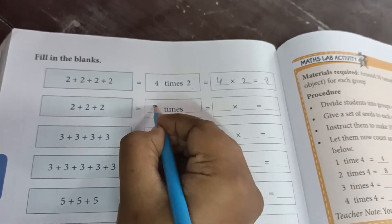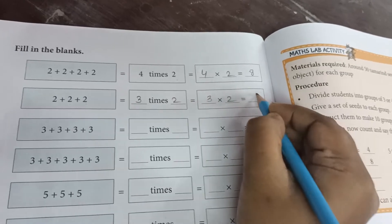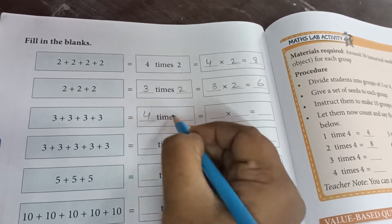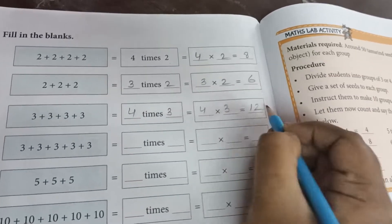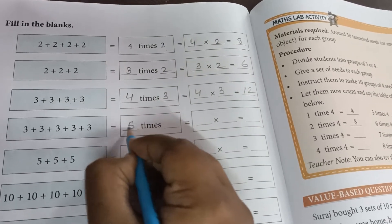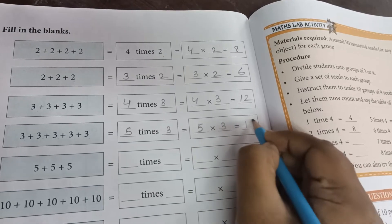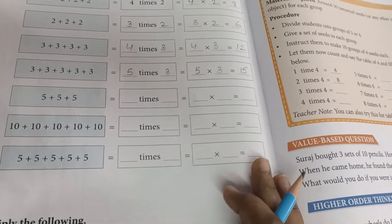Now 1, 2, 3. So, 3 times 2 means 3 multiplied by 2, 3 2s are 6. 1, 2, 3, 4. 4 times 3, 4 multiplied by 3, 4 3s are 12. 1, 2, 3, 4, 5. 5 times 3 means 5 multiplied by 3, 5 3s are 15. And so on. These 3 blanks you have to do it with your own.